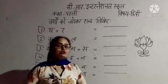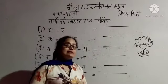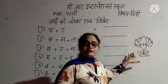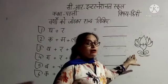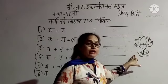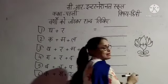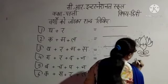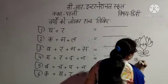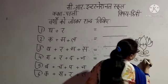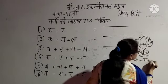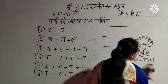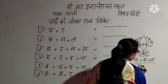यह वर्क मैं पहले भी करवा चुकी हूं — कैसे करते हैं देखते हैं। यह किसका चित्र है? फूल का — पर कौन सा फूल है? यह कमल का। तो कमल कैसे लिखा जाता है: ka plus ma plus la — इन सब को मिलाकर क्या बनता है?